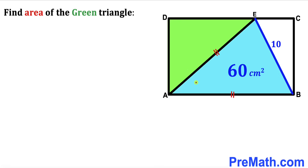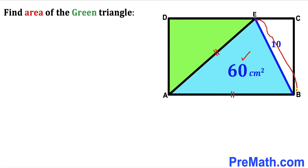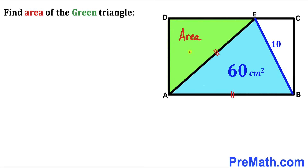Welcome to Pre-Math. In this video we have three triangles: the blue triangle, the green triangle, and the white triangle, fully inscribed in rectangle ABCD. The area of the blue shaded triangle is 60 cm², the side length EB of the blue triangle is 10 cm, and side length AE equals side length AB.